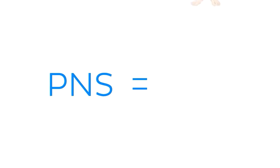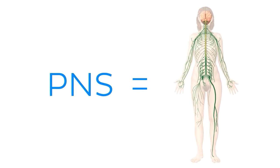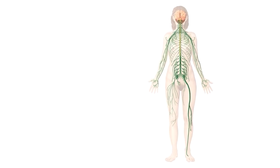Nerves make up the peripheral nervous system — that is, the part of the nervous system that does not include the brain or the spinal cord. In this image of our person in the anatomical position, you can see that the peripheral nervous system is highlighted in green throughout the body — that is all the nerves.